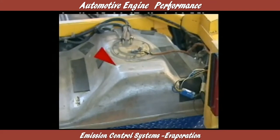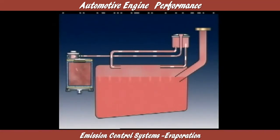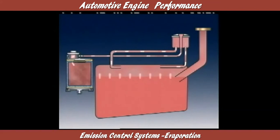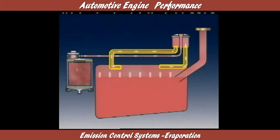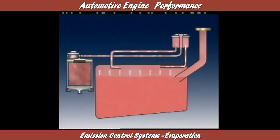Modern tanks also contain an expansion volume, either directly in the shape of the tank or in a separate chamber connected to the fuel tank by tubing. A liquid vapor separator may be connected to the tank by a number of tubes, allowing liquid fuel to separate from the vapors and return to the tank.